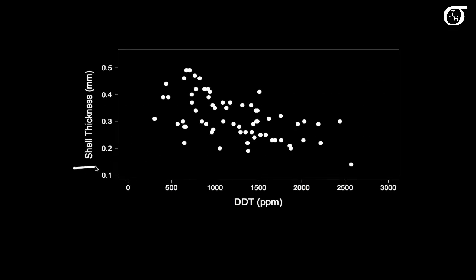Here's a plot of shell thickness versus DDT for this sample of 65 eggs. It does appear, to my eye at least, that there is some sort of trend there, that there is a decreasing trend of shell thickness with DDT.